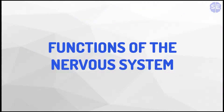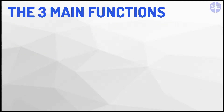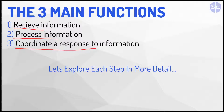Now onto the functions of the nervous system. The nervous system acts as a communication system between the body's internal cells and organs and the external world. This enables the brain to obtain information about what's going on inside and outside the body and respond appropriately. The functions of the nervous system boil down to three main functions: receiving information, processing the information, and coordinating a response to the information.